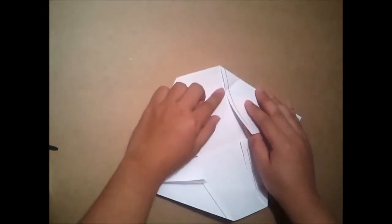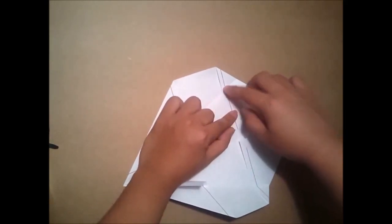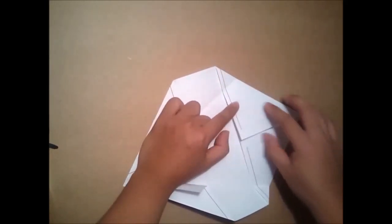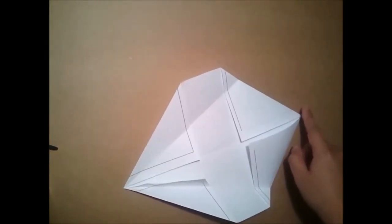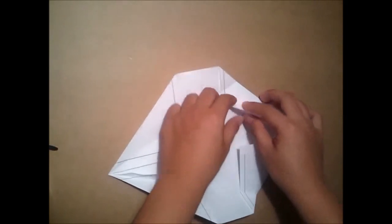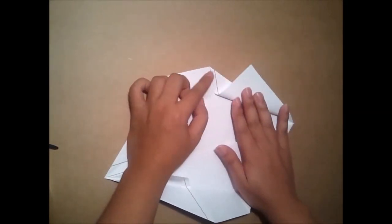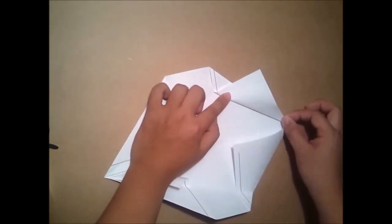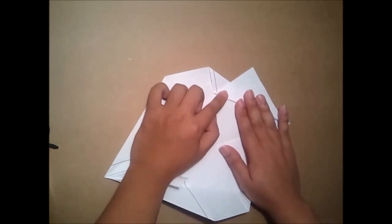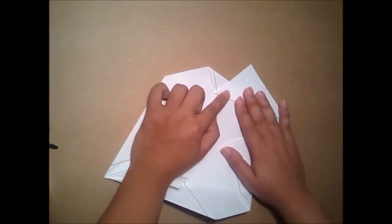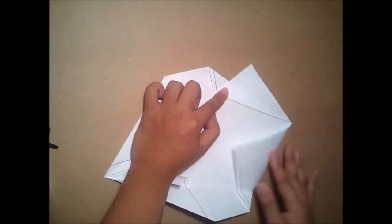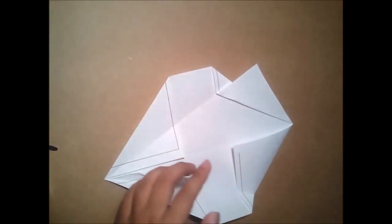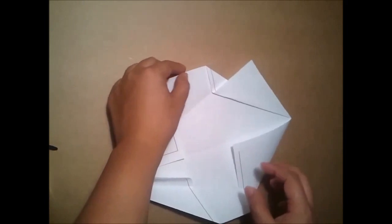Next step, you can see the line here. Now, on this edge, we will start from the intersection to get the point here. And then we will repeat the same step for the other side.